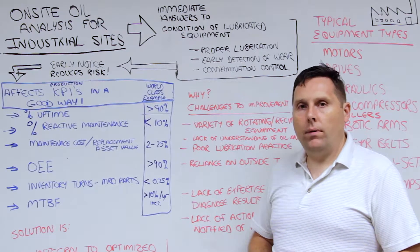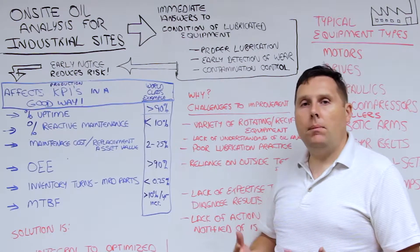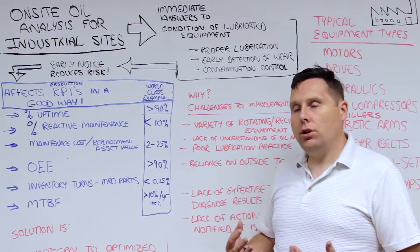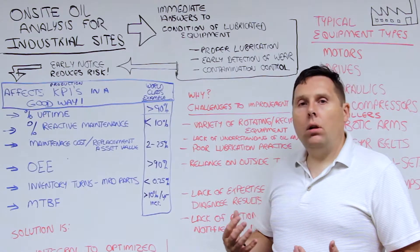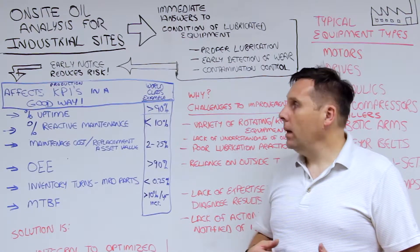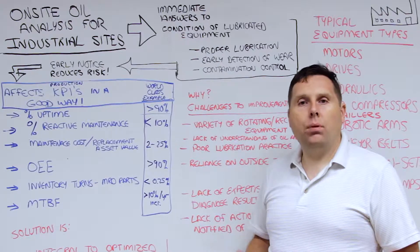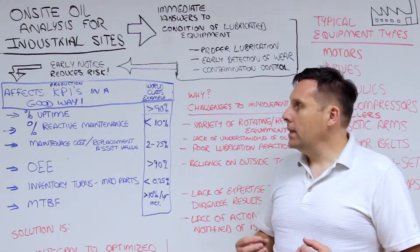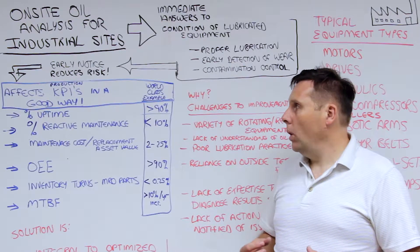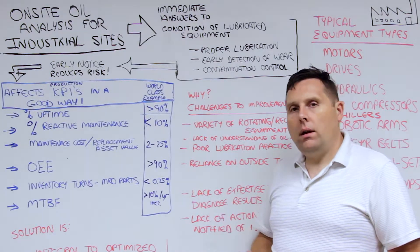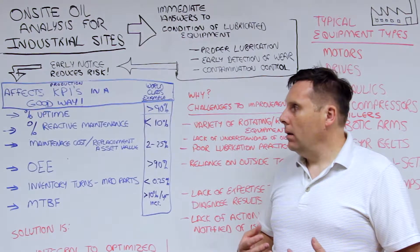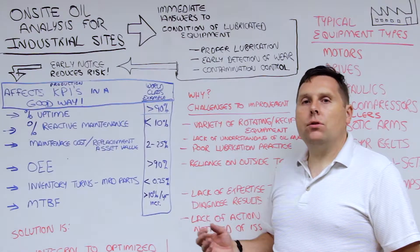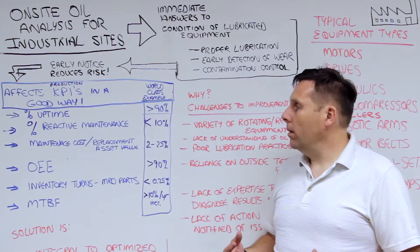This is very important for industrial facilities nowadays because anybody who's involved in some sort of discrete or process industrial production are all managing their systems based off of KPIs or knowledge performance indicators. On-site oil analysis affects your production KPIs in a good way. There's a variety of different systems out there and as an industrial facility, be aware of the major KPIs that are affecting your facility.